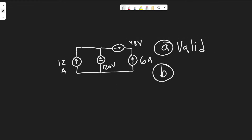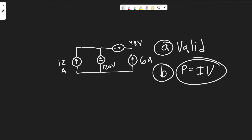So it's valid, and now for part B: we're finding the power developed by the current sources. What is power? You need to know the formula, which is P equals the current multiplied by the voltage. What you need to know is that the power developed by the circuit has to always be equal to the power dissipated by the circuit.